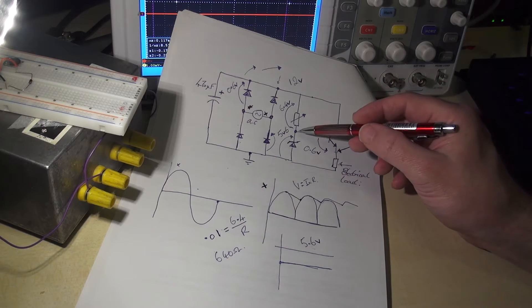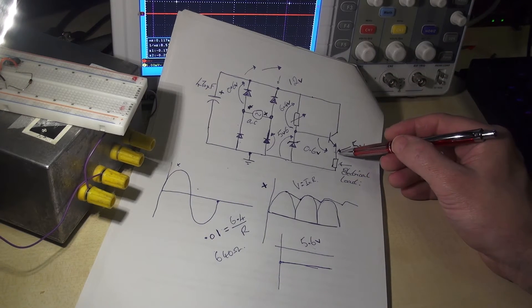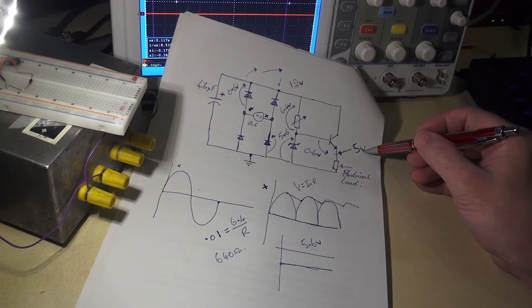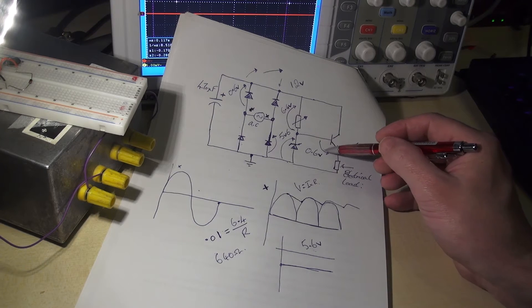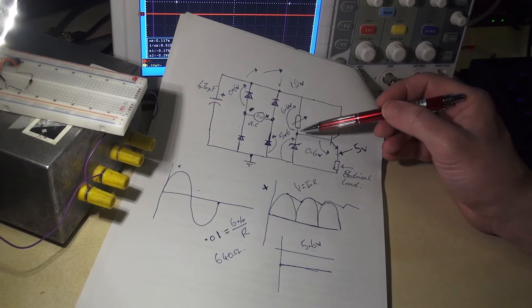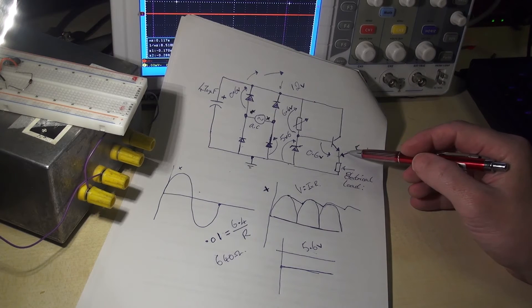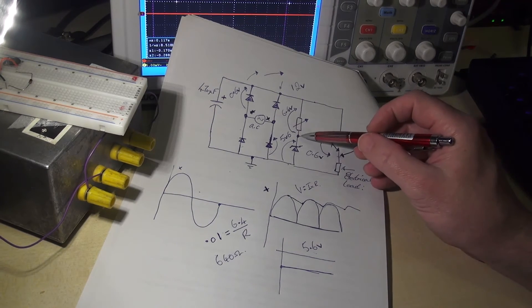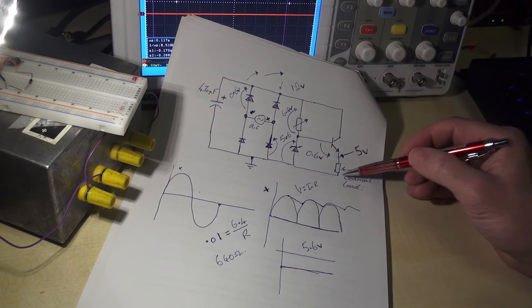So if the base is steady at 5.6 volts, the voltage at the emitter will be 5 volts, because we lose 0.6 volts across the base-emitter junction to switch the transistor on. As long as we maintain a steady Zener voltage here, the emitter will faithfully, like a dog almost, follow the voltage at the base, even when we change this electrical load around.